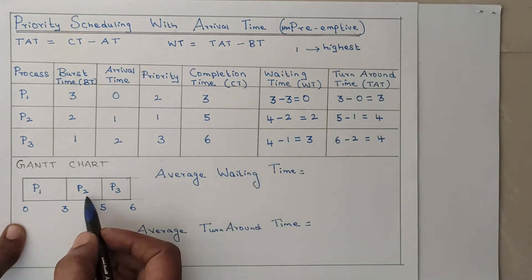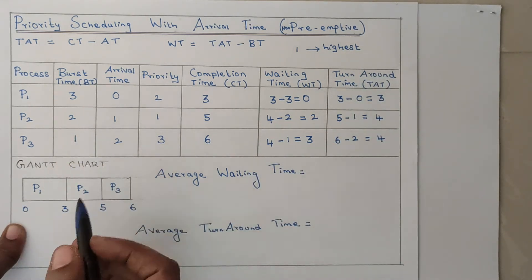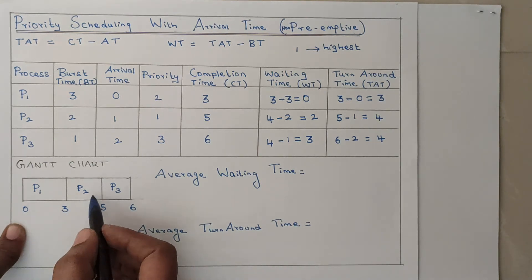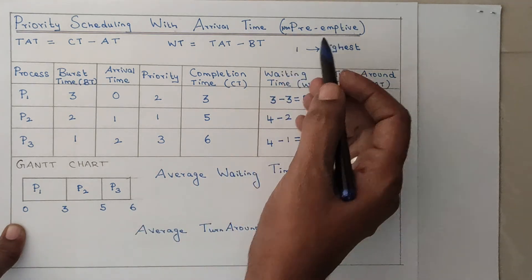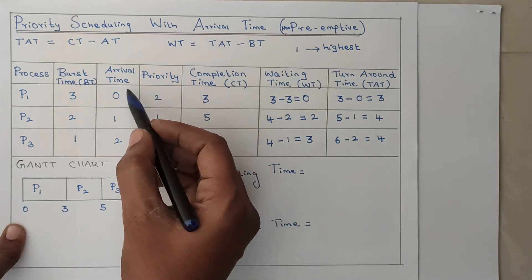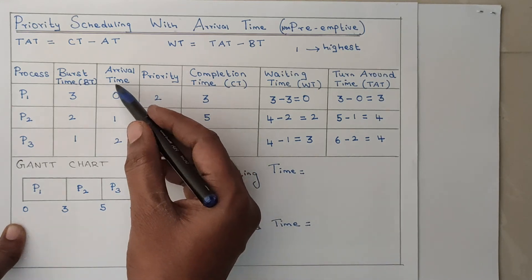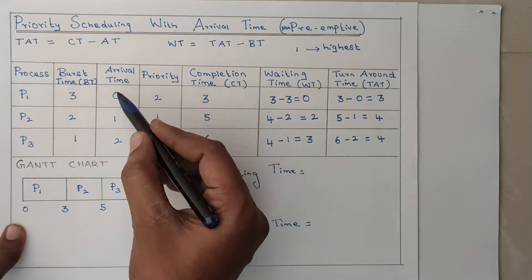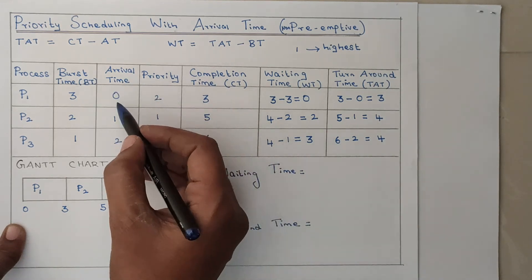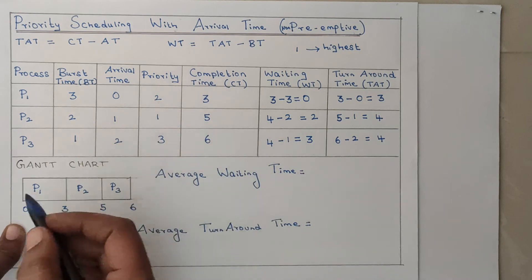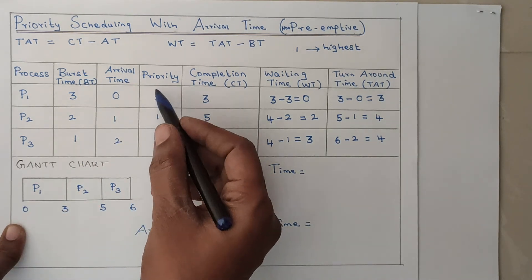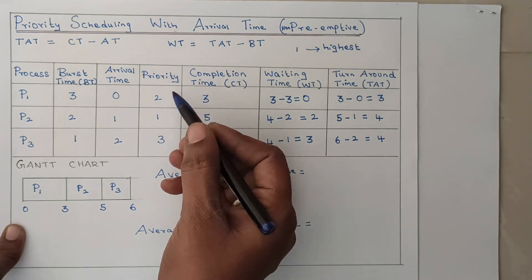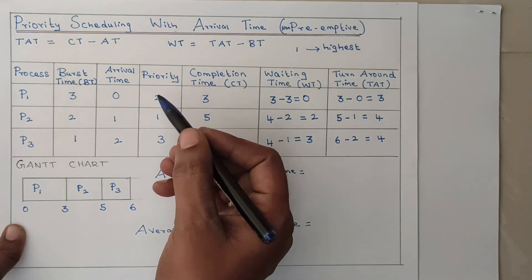The burst time of P2 is 2ms, so from 3 to 5ms, P2 is executed. The last slot is given to P3. Since it is non-preemptive, we first apply the condition of arrival time, and then next priority is considered. P1 gets executed first because its arrival time is 0. If two processes arrive at the same time, then we check priority to decide which one to execute.